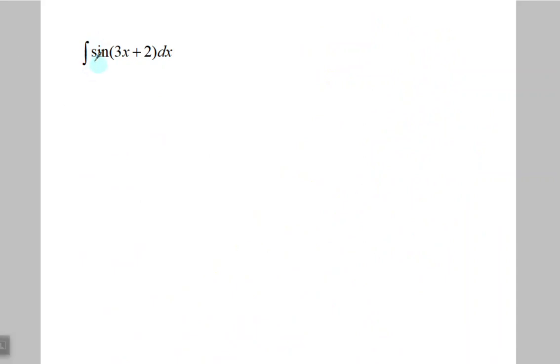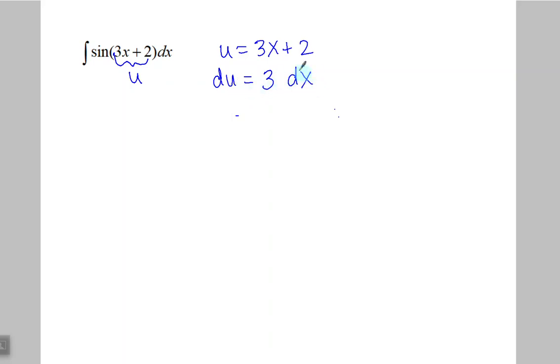Let's do the integral of sine of 3x plus 2 dx. I notice this is a composite function — all of this part right here is inside the sine function, so I need to use my method of substitution, the backwards chain rule. That part is going to be the u, the inside function. Off to the side, I write down u equals 3x plus 2, then du equals 3 times dx. Now I notice that I have dx but I don't have a 3 there, so I need to have that 3 in order to properly substitute.